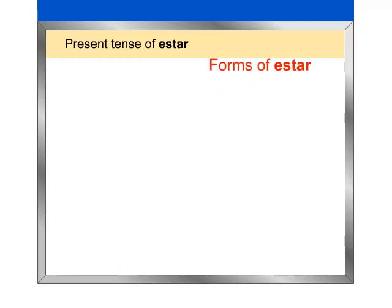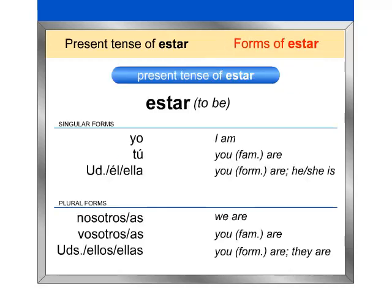Here is how estar is conjugated in the present tense. Repeat after me the singular forms of estar. Yo estoy. Tú estás. Usted, él, ella — está.